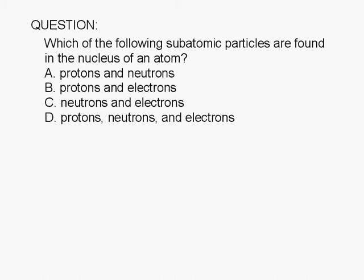Which of the following subatomic particles are found in the nucleus of an atom? A. Protons and Neutrons B. Protons and Electrons C. Neutrons and Electrons D. Protons, Neutrons, and Electrons